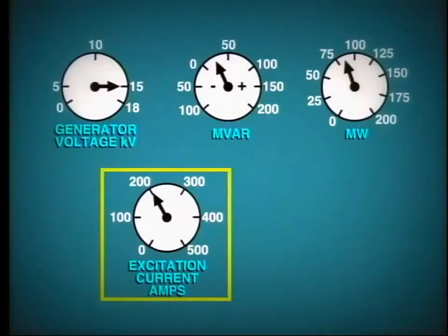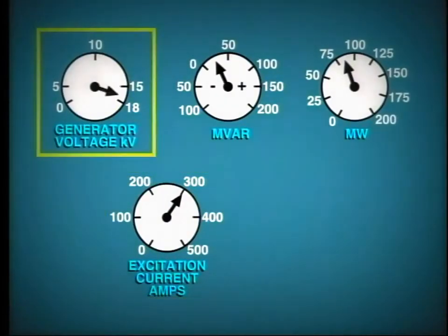What is the effect of adjusting excitation? Well, obviously one effect is to adjust the output voltage of the generator. For example, by increasing the excitation current, the generator terminal voltage will increase.